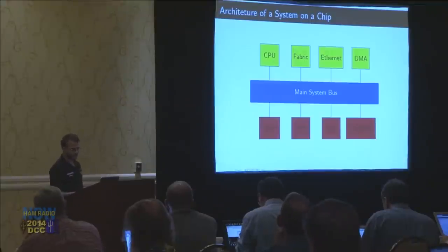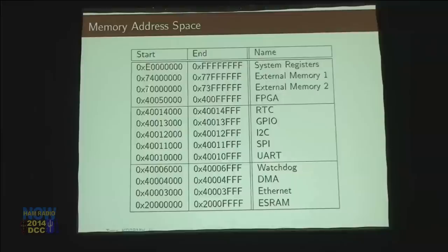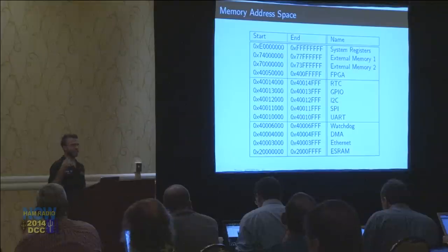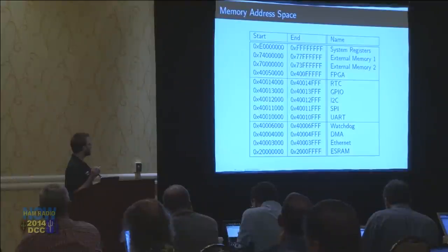So what does this look like when you're programming? You end up having these memory addresses. You get this thing called the memory address space or the memory map. When you look at your Zynq data sheet or your SmartFusion data sheet, there's a page that lists what are the start and end addresses of each of the things on the system. It's all the slaves — the masters don't have an address. Only slaves have an address.